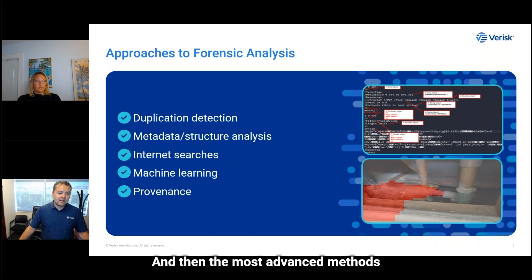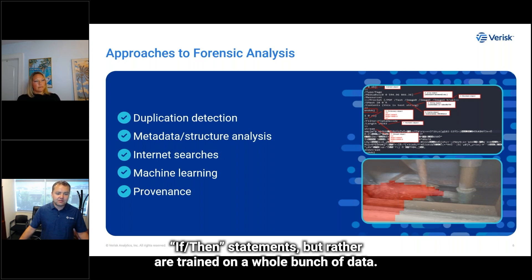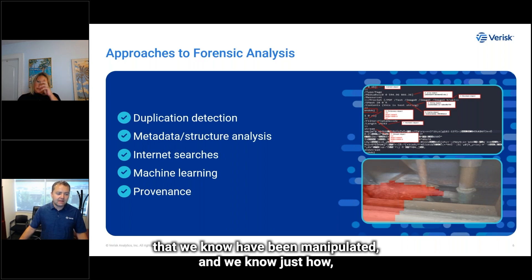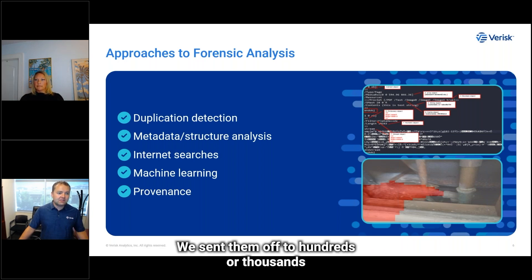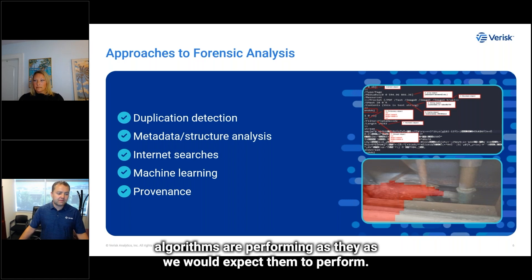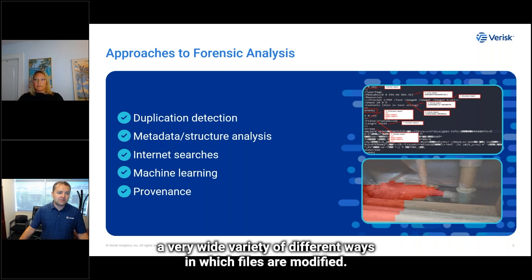The most advanced methods of detection rely upon machine learning — algorithms that are not trained based on a human being writing a bunch of if-then statements, but rather trained on a whole bunch of data. At Verus, for example, we've collected probably the world's largest set of PDF documents that we know have been manipulated, and we know just how. We took a bunch of documents that we ourselves created and sent them off to over a thousand different workers around the world, and paid them to modify those and send them back to us. That enables us to apply machine learning methods and verify that these algorithms are performing as we would expect.